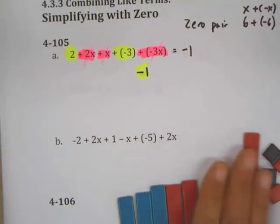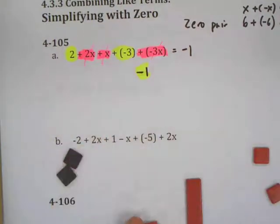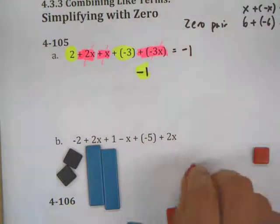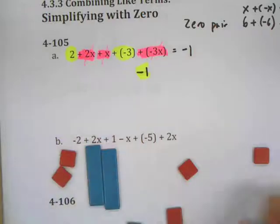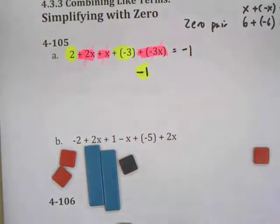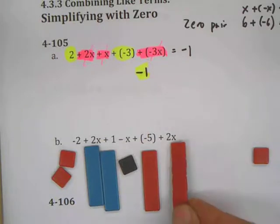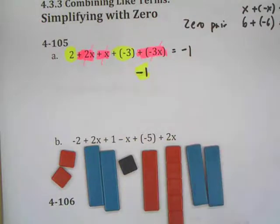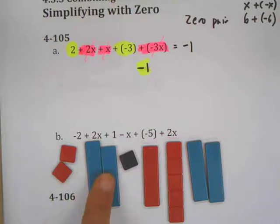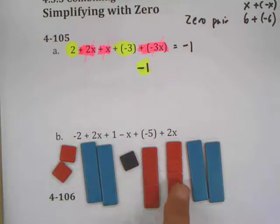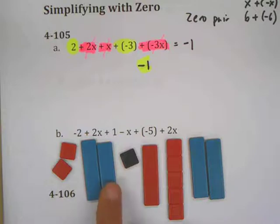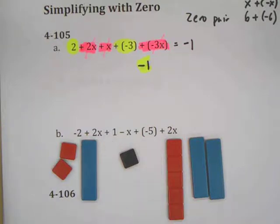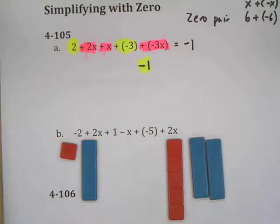Let's build the other one — also from class today. So negative two is the red side. Negative two plus two x plus a one plus negative x. The little bars represent five units, so this is a negative five plus two x. My full expression is negative two x plus two x plus the one minus x plus negative five plus two x. I'm looking for zero pairs.